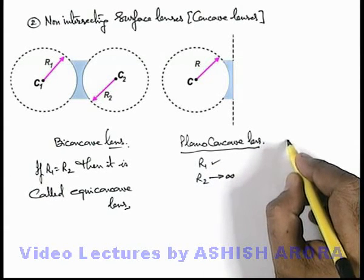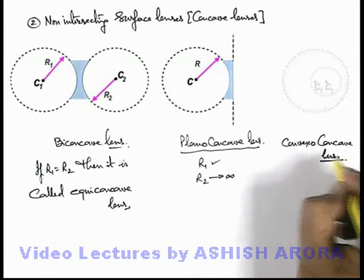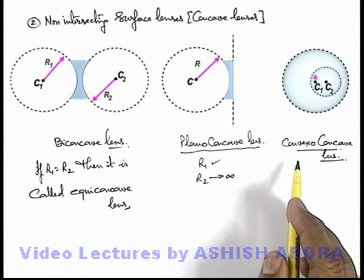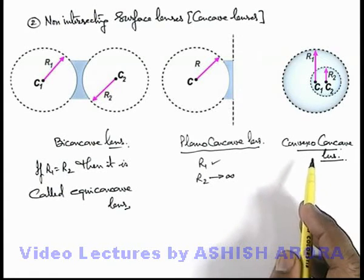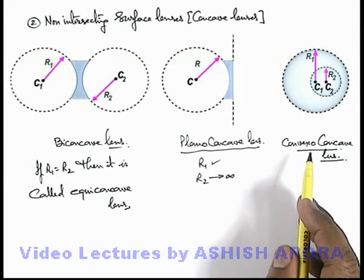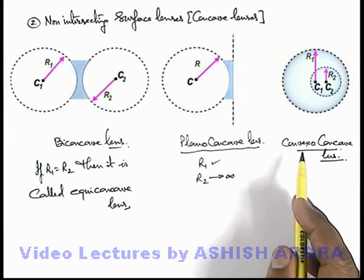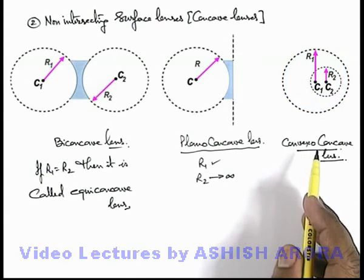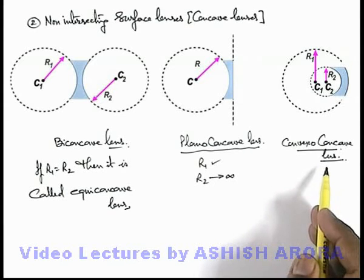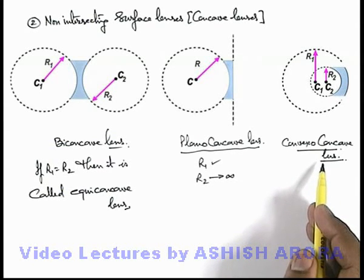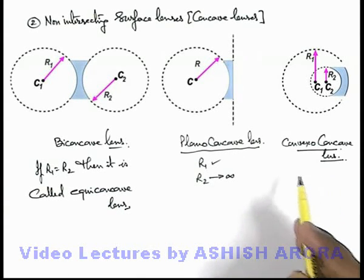The 3rd category of concave lens is termed as a convexo-concave lens. In this lens the radius of curvature as well as the center of curvature of the 2 spherical surfaces lie on the same side, and the 2 surfaces do not intersect. The region between the 2 surfaces — having their centers of curvature on the same side of the lens — when filled with a transparent medium forms what is termed a convexo-concave lens. Unlike the bi-convex lens, here both centers of the 2 surfaces lie on the same side of the lens.